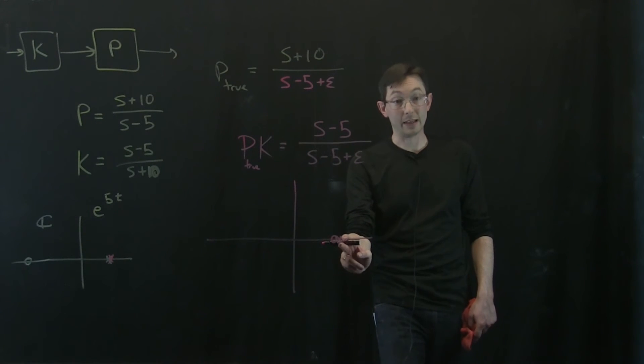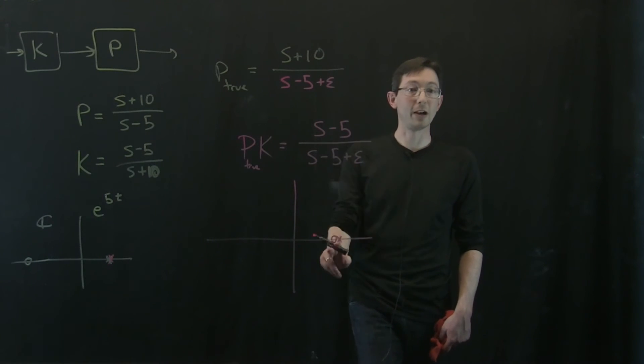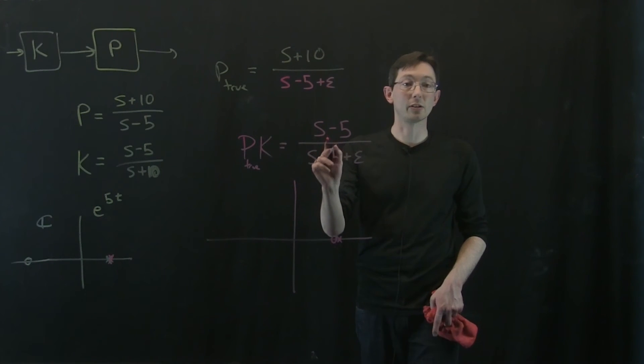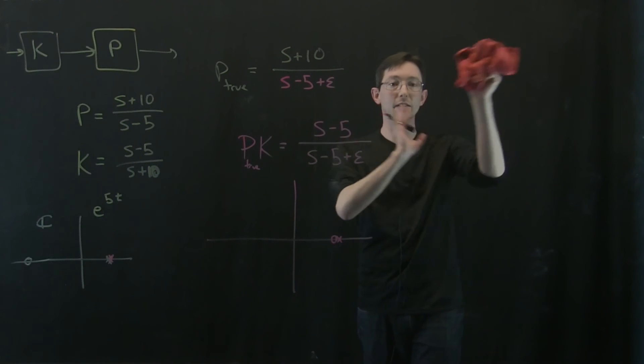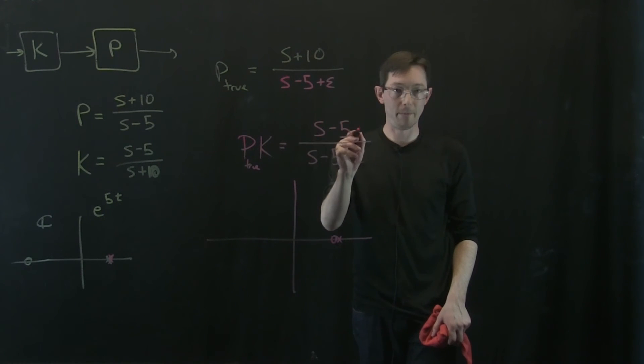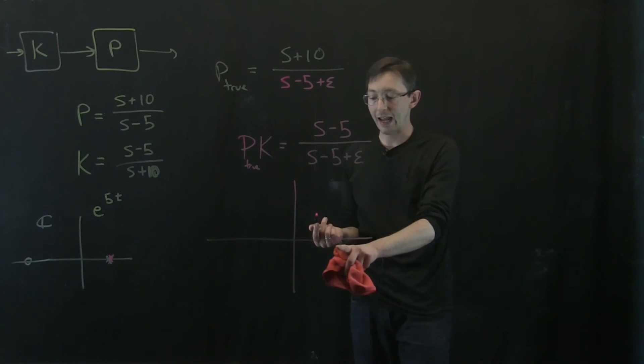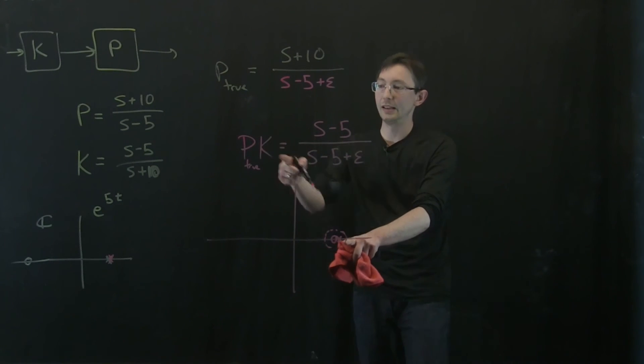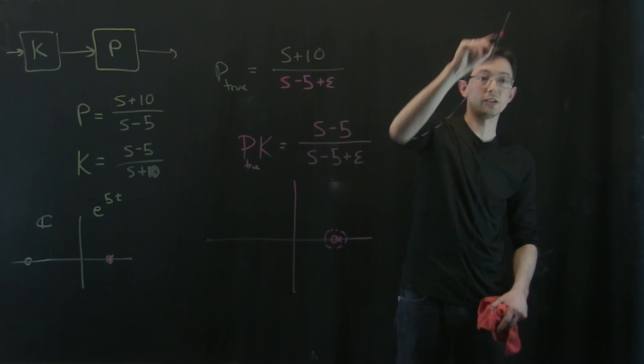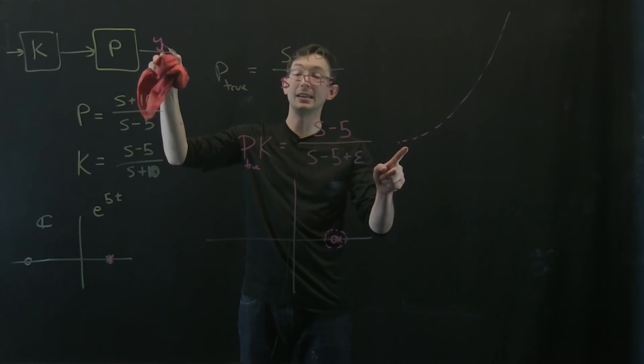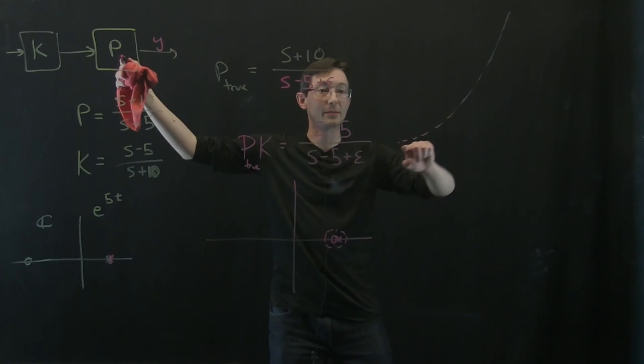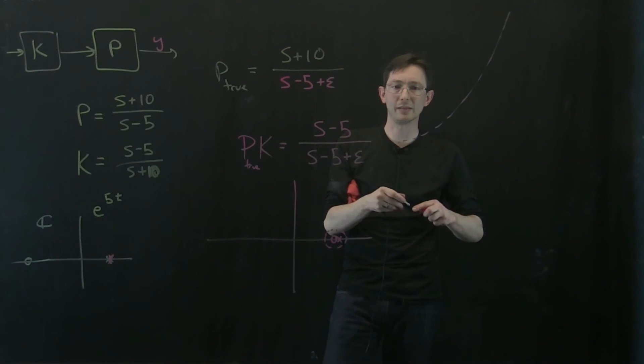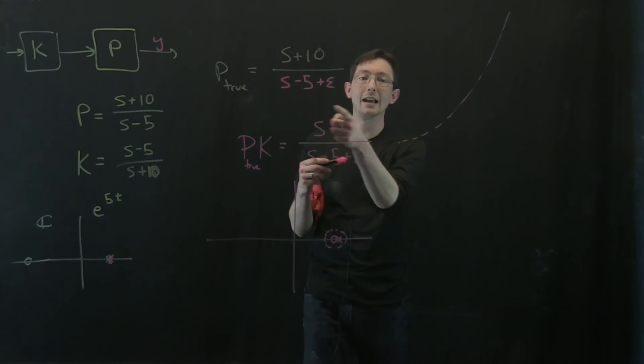I have a pole that is really unstable and a zero right next to it. And so what this means is that this unstable mode is nearly unobservable. So if we go back to our state space observability controllability, if I have a zero in the right half plane at S equals 5, then anything near S equals 5 is going to be really hard to observe. And so what's going to happen is my system is going to grow exponentially and I'm barely even going to be able to see it in my output Y.